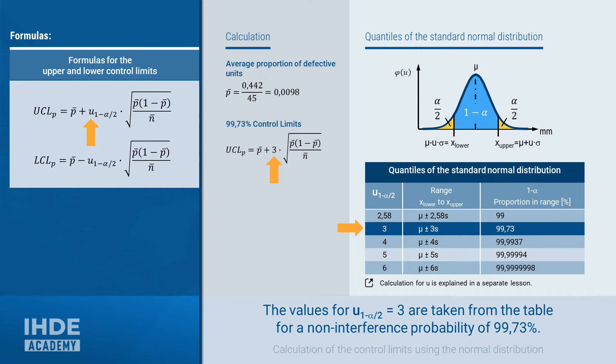Next, we need the quantile u of the standard normal distribution for a non-interference probability of 99.73%. There are tables for these in relevant books or on the internet. A small excerpt from such a table is shown here on the right. If you want to know more about these tables or how you can calculate these quantiles yourself, you should take a look at the separate lessons on this topic. We chose a non-interference probability of 99.73%. This also corresponds to the range of plus minus 3 times the standard deviation, hence 6 sigma.